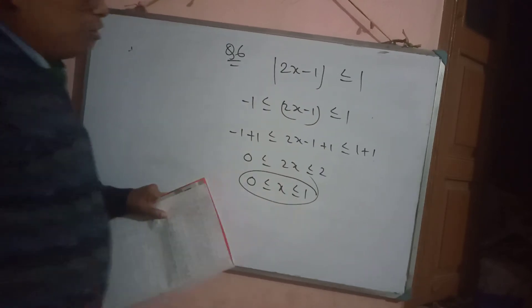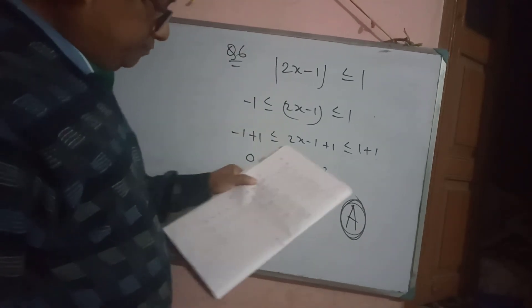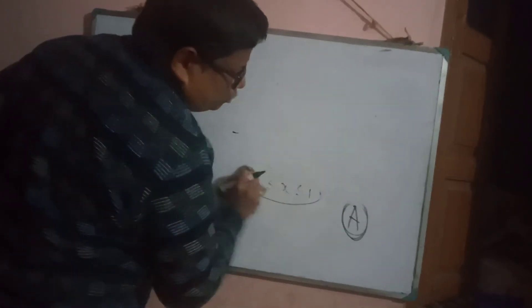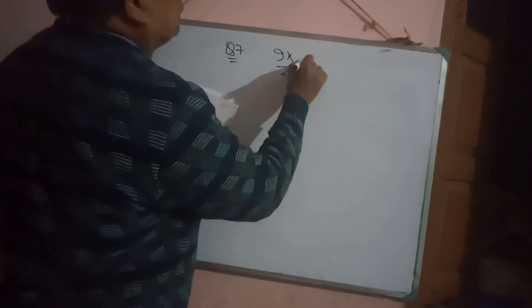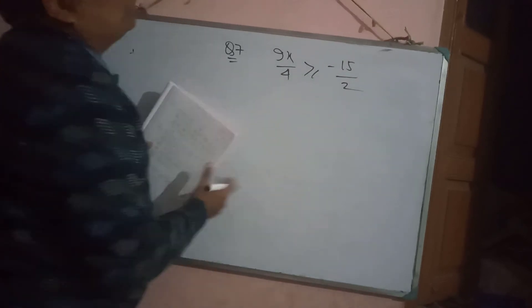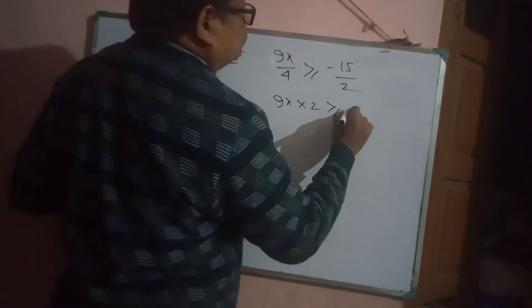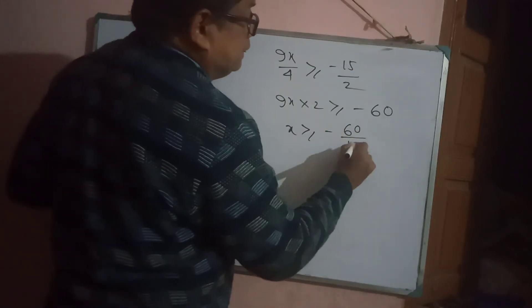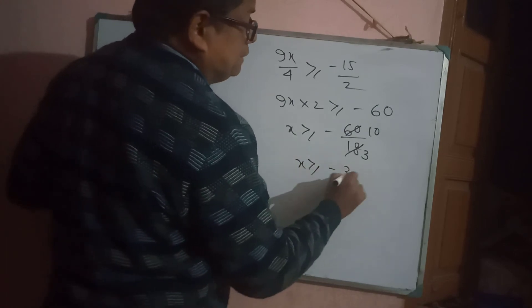Question number 7: 9x/4 ≥ −15/... involves negative sets. Multiply both sides: 9x × 2 ≥ −15 × 4 gives 18x ≥ −60. So x ≥ −60/18. Simplify: x ≥ −10/3, which equals x ≥ −3 and 1/3.